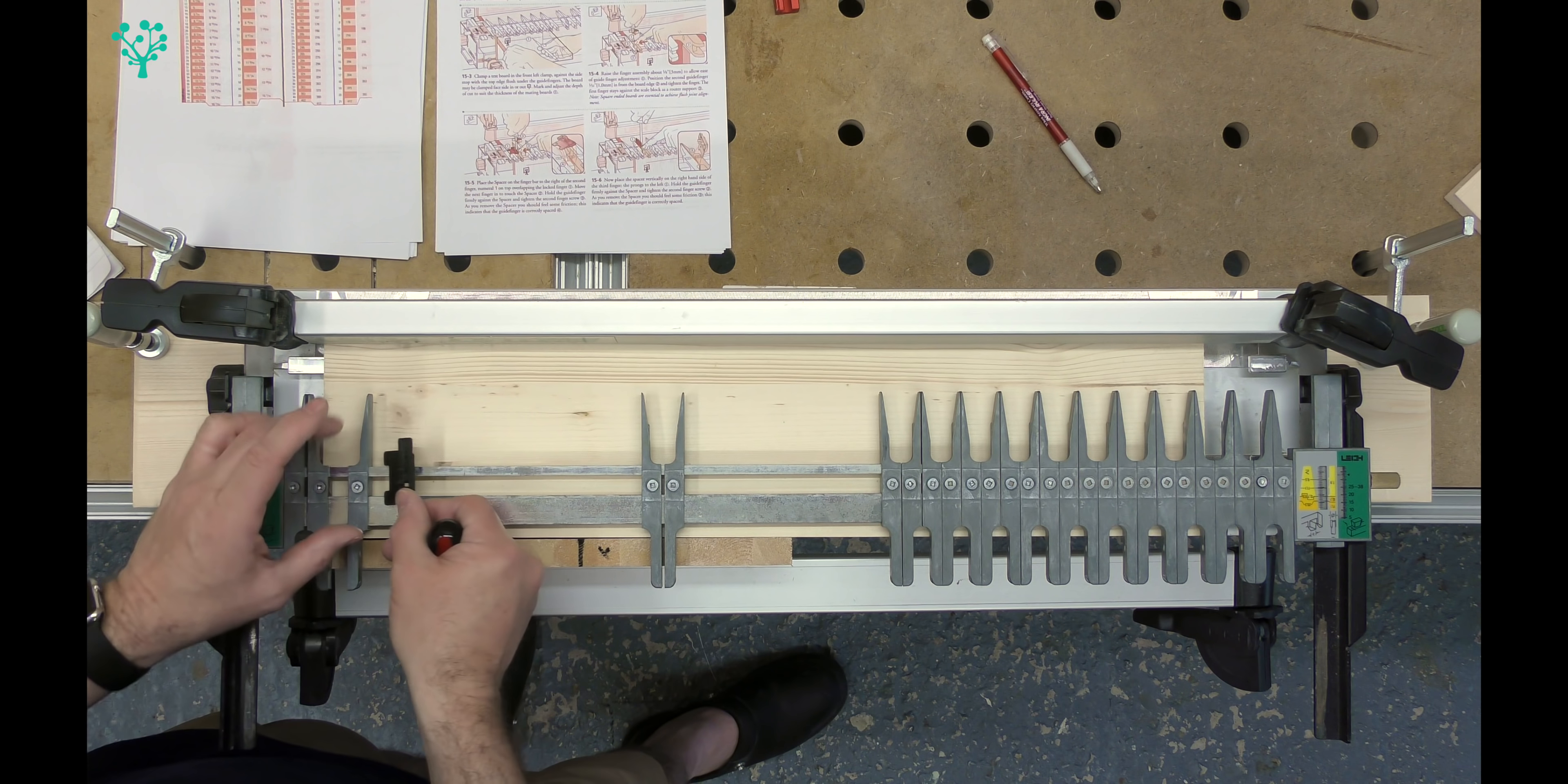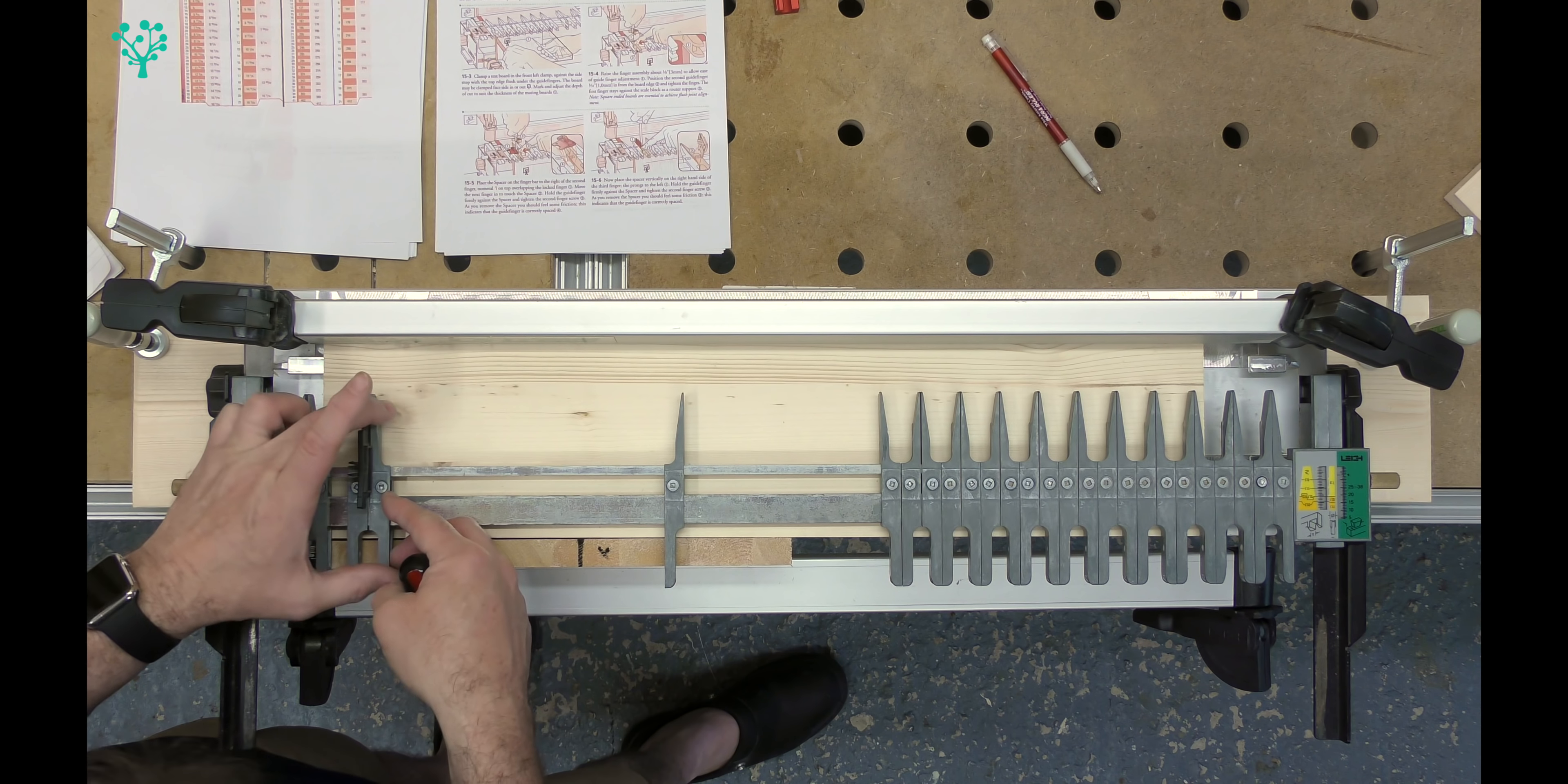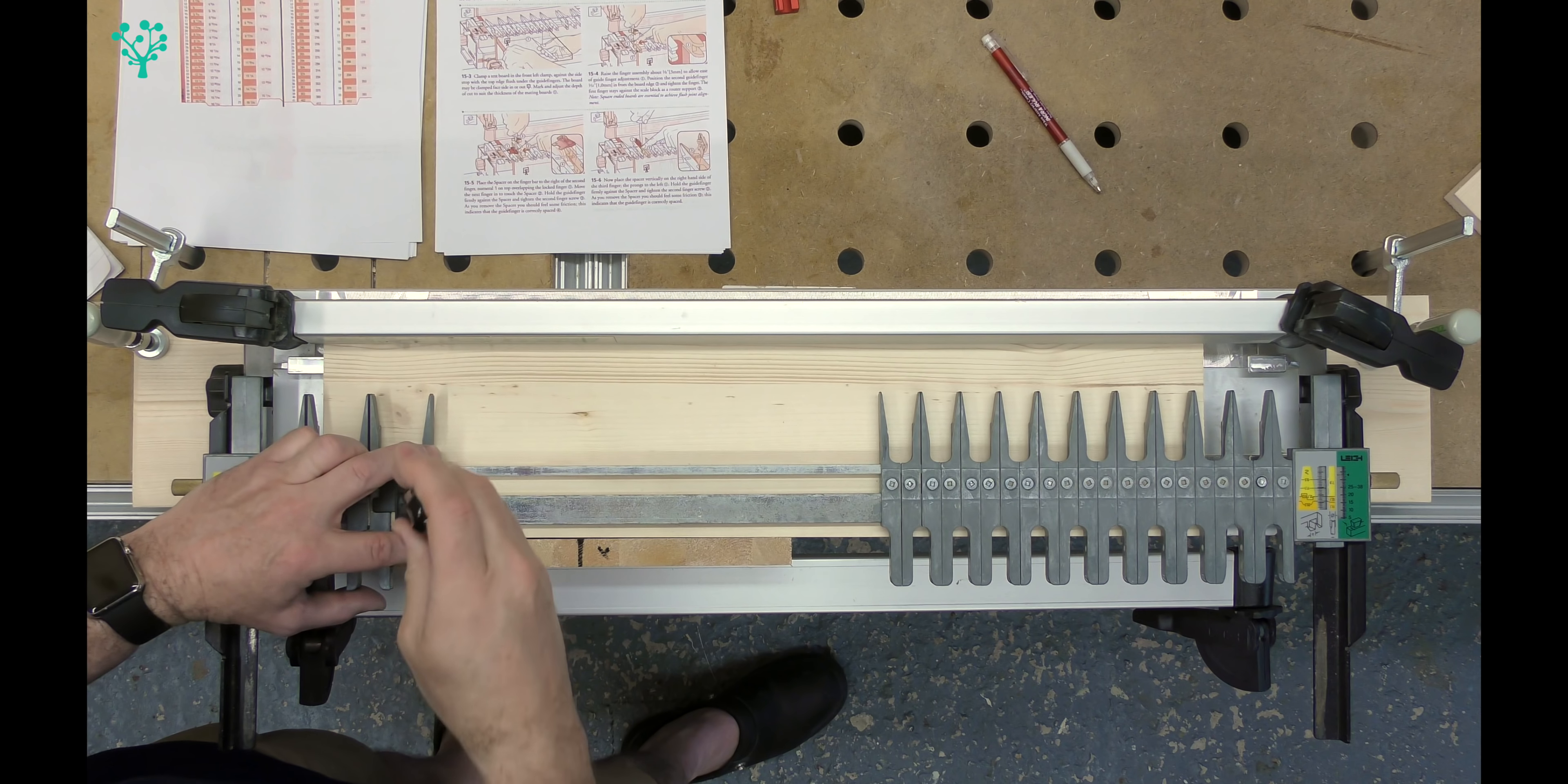You then take the number two and you hold that against the fingers in that orientation and you bring this one up and clamp that into place. You repeat this down your fingers.